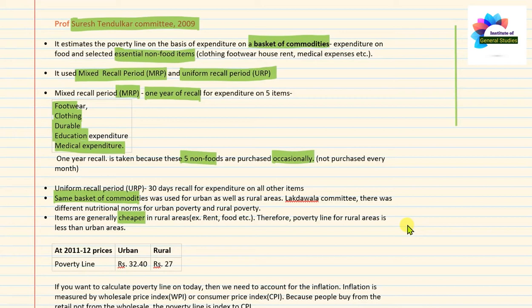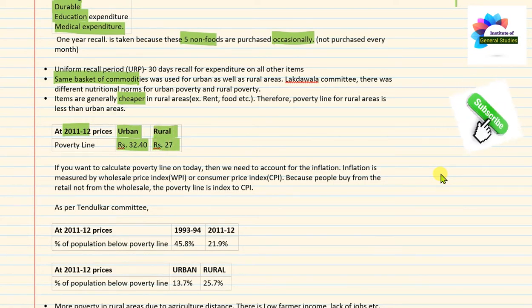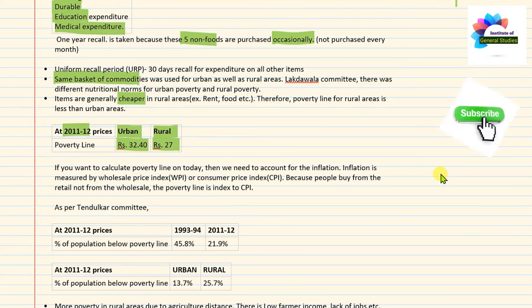According to the Tendulkar Committee, in 2011-12, the urban poverty line was Rs. 32.4 per day and the rural poverty line was Rs. 27 per day. These are 2011-12 prices. If we want to calculate the poverty line as of today, we need to account for inflation.